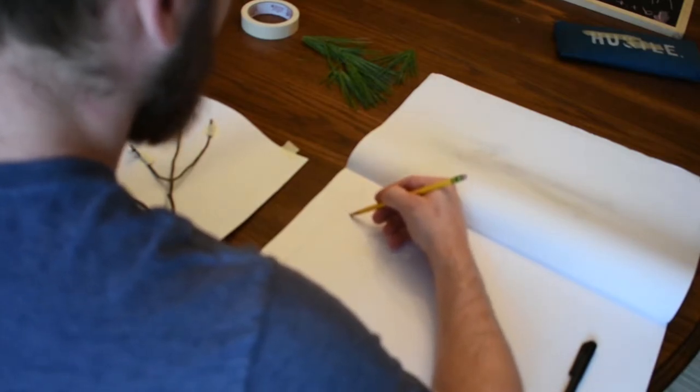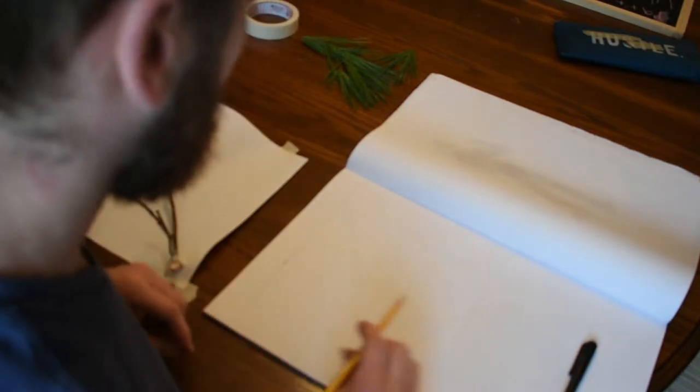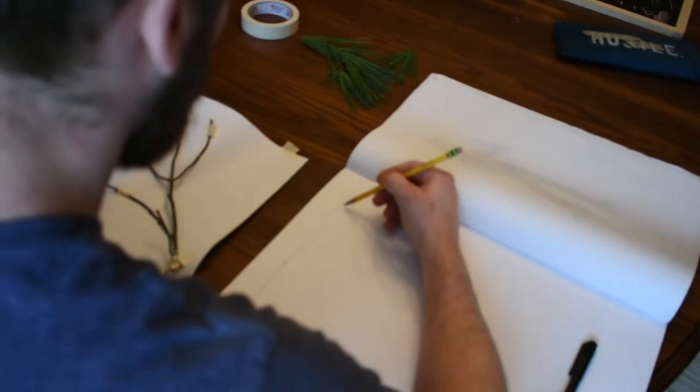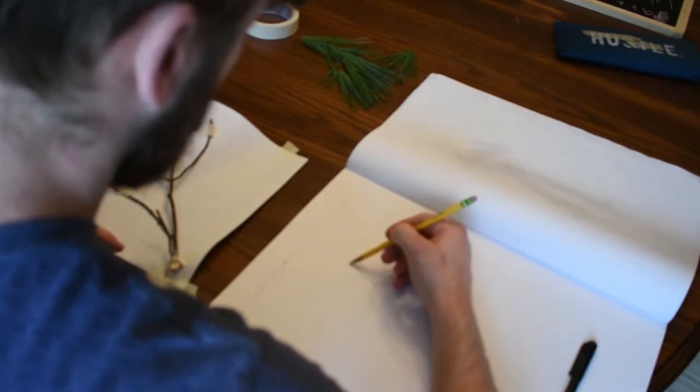Those are the shapes that we're paying attention to. Every now and then we can check the branch to make sure it's the right thickness or it's got the right little bumps, but primarily, overall, what we're looking at is those white shapes.